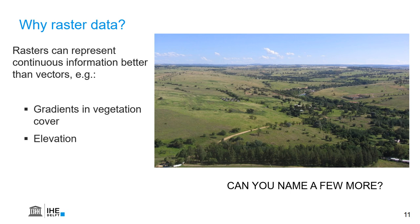We could think of soil moisture that gradually changes over the landscape — it doesn't have sharp borders. Or meteorological variables such as precipitation or temperature.